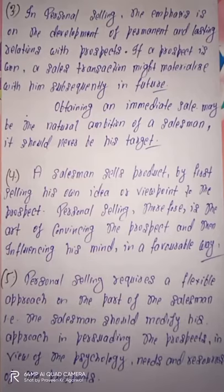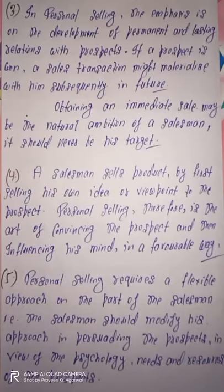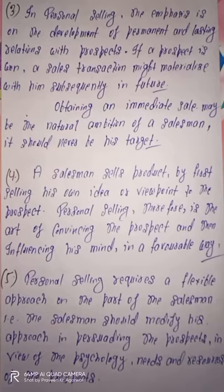The next feature is that in personal selling, the emphasis is on the development of permanent and lasting relations with the prospect. Jab ek seller kisi bhi buyer ko contact karta hai, to uska purpose hota hai permanent aur lasting relations maintain karna. Agar prospect ka confidence jeet liya jaata hai, to future mein bhi sales transaction ki umeed ki ja sakti hai. Personal selling ka ultimate objective immediate sale nahi hona chahiye — balki aise relations banane chahiye jisse future mein zaroor purchase ho.